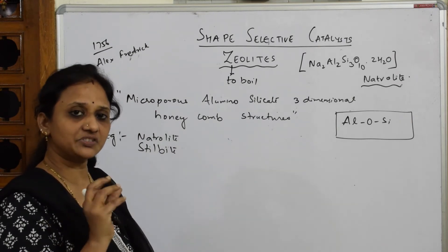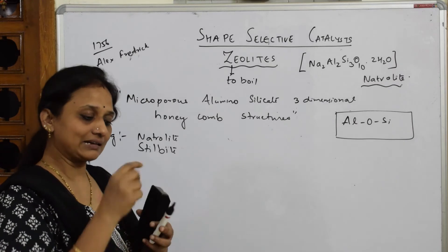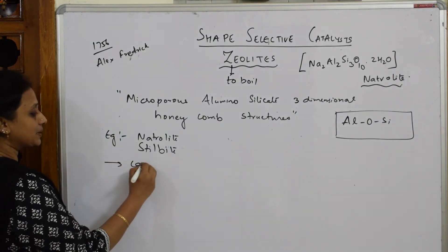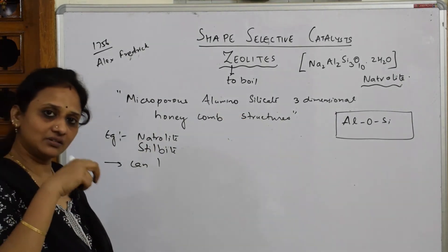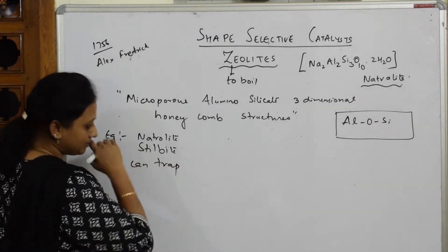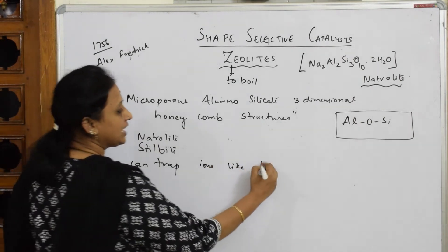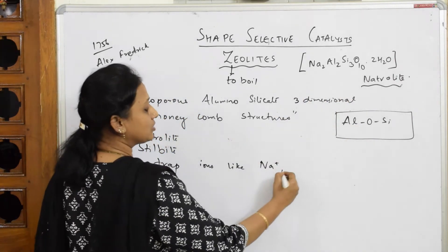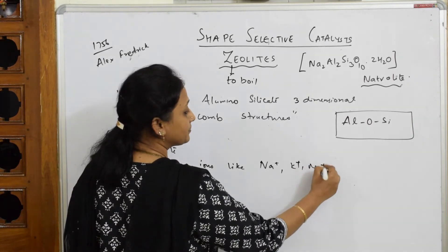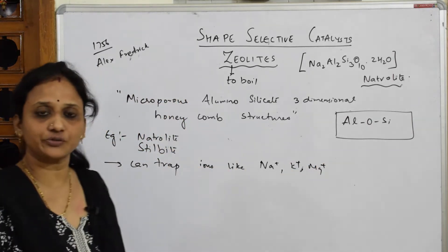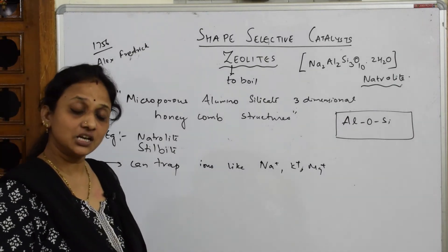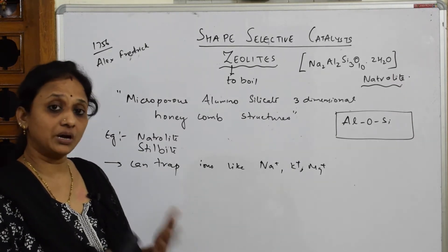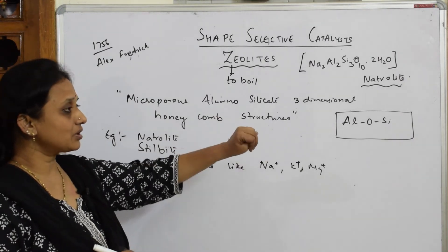Because of their three-dimensional structure, zeolites have certain sites that can trap small ions and cations. They can trap ions like Na⁺, K⁺ (potassium), and Mg²⁺ (magnesium), which fit into the sites of the zeolite. Because of this, zeolites are widely used in petrochemical industries and in different biochemical applications.